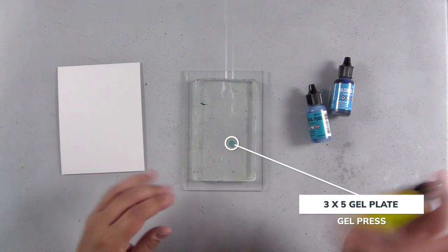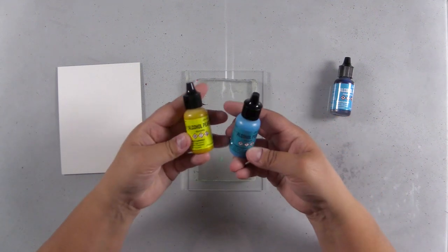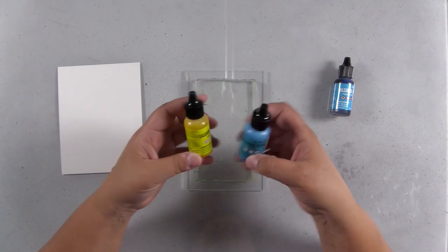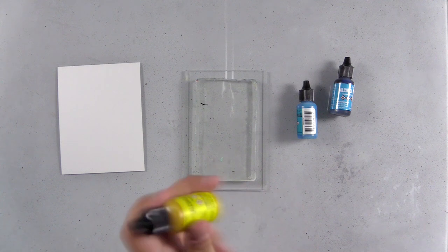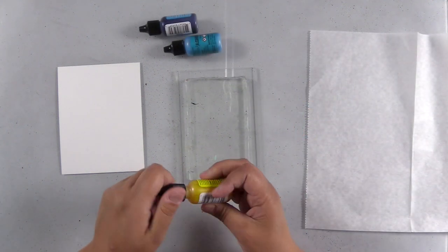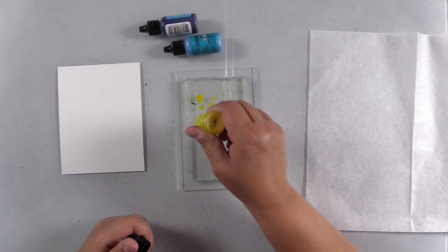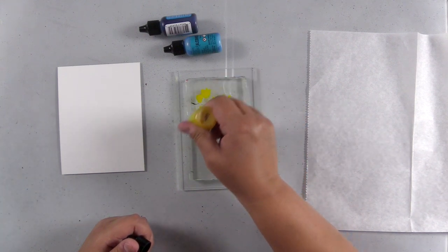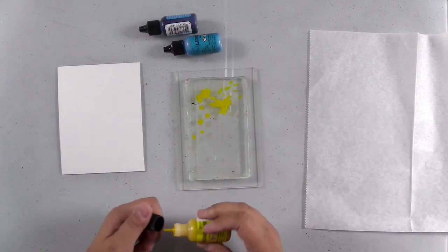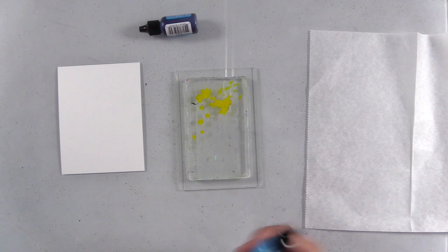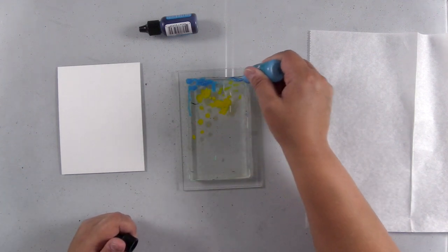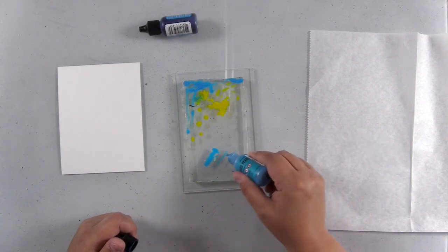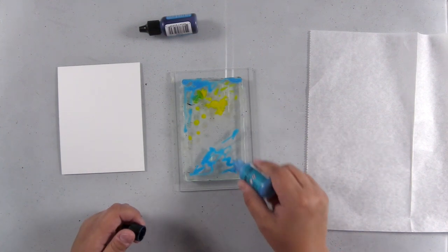I'm going to do some creating here. I have a 3x5 gel press, and I also have two Ranger alcohol pearls, one in alchemy and one in tranquil. Alchemy is the yellow one that I'm using now. There's a ball bearing on the inside of the container, and you need to shake the bottle vigorously to suspend the mica powder so that you can see all of the metallic goodness after you pull your print.